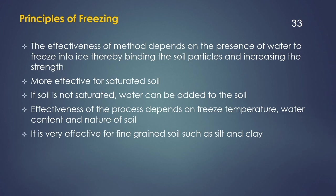The principles of the ground freezing technique involve freezing the water present in the soil. Therefore, this method is more effective for saturated soil. In the absence of water, or if the soil is not saturated, water can be added so that the soil can be frozen. The effectiveness of this process depends on the temperature of freezing, the water content of the soil, and the nature of the soil. This method is more ideally suited for fine-grained soils such as silt and clay.